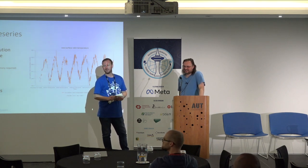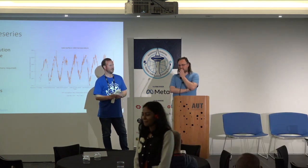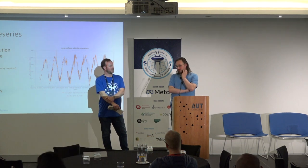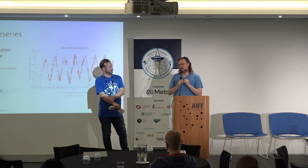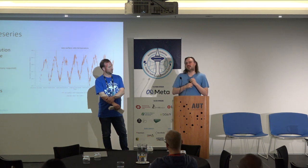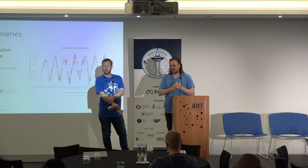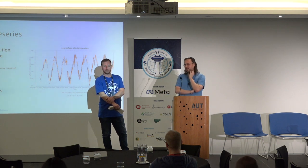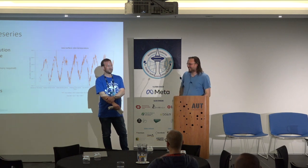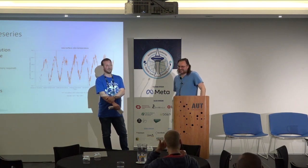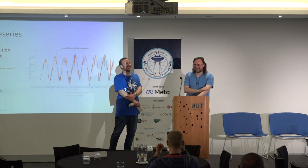Final question: what was the chunking scheme for that Zarr dataset? Answer: we optimized specifically for time series data — small geographical extents, around 100 pixels by 100 pixels, and approximately 100 days. So roughly 100 by 100 by 100 — nice round numbers.